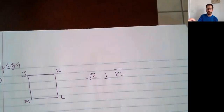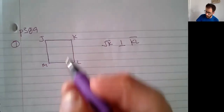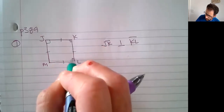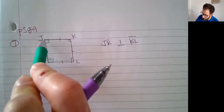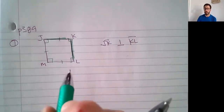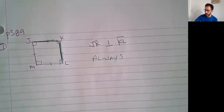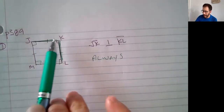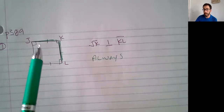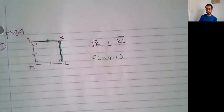So we know it's a square. Let's start filling in what we know. They're asking: is JK perpendicular to KL — is that always or sometimes true? Always. Because for it to be a square, every angle is going to be 90 degrees, which means that any two consecutive sides have to be perpendicular to each other.